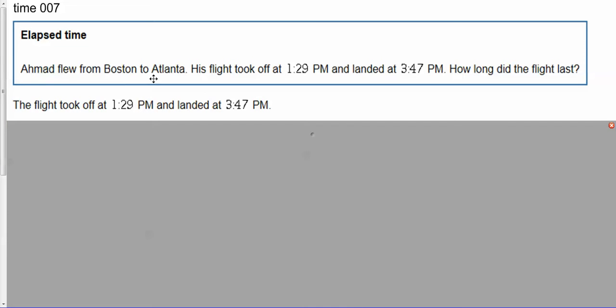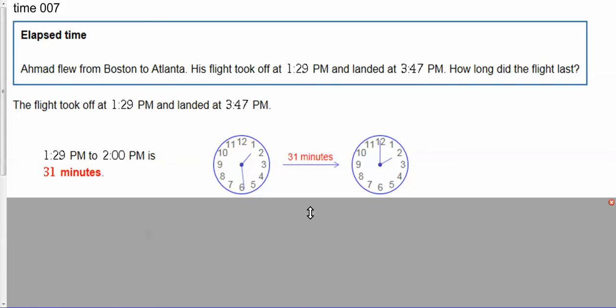Good news is we're staying in the eastern time zone, so we don't have to worry about time zones changing. So what we're going to look at here is how long does it take to get from 1:29 to 2 p.m.? If I go from 29 all the way up to 00, it tells me that lasts 31 minutes.